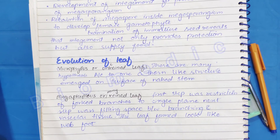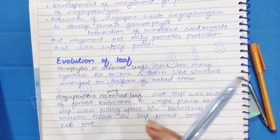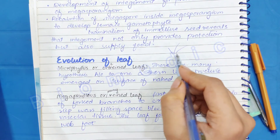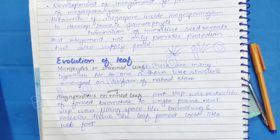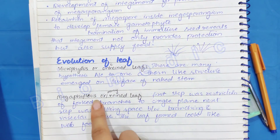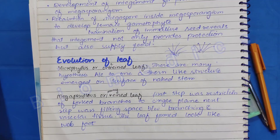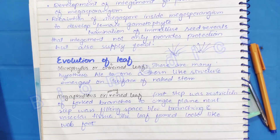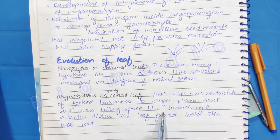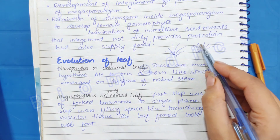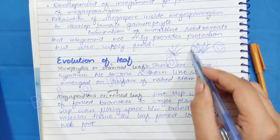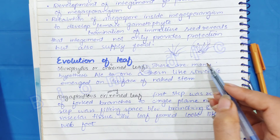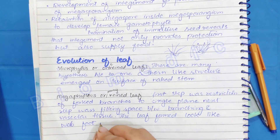If we talk about the megaphyllous leaves, there are many branches in three dimensions. These branches are then aligned in one plane — there is a restriction for the branches to grow in a single plane. After they are aligned in one plane, a structure is formed that resembles the web foot of a duck.